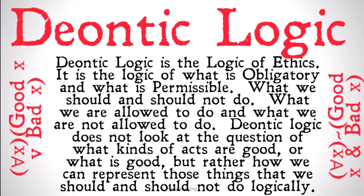Deontic Logic is the logic of ethics. It's the logic of what is obligatory and what is permissible — what we should and should not do, what we are allowed to do and what we are not allowed to do. Deontic Logic does not look at the question of what kinds of acts are good or what good as a concept is. Those are questions for ethics and metaethics, but rather how we can represent those things that we should and should not do logically. Deontic Logic builds the bridge between the strict rigor of logic and the field of ethics.